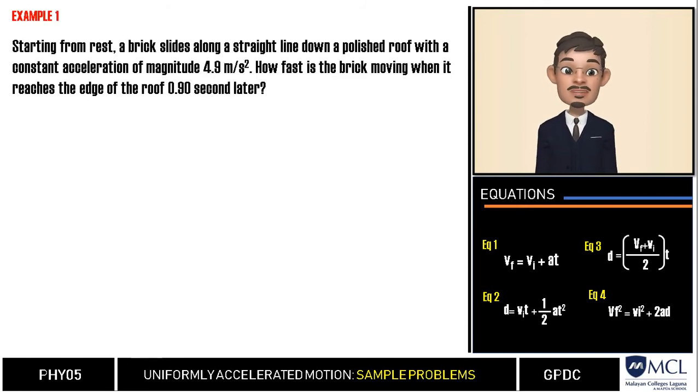Starting from rest, a brick slides along a straight line down a polished roof with a constant acceleration of magnitude 4.9 meters per second squared. How fast is the brick moving when it reaches the edge of the roof 0.92 seconds later?